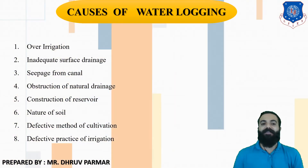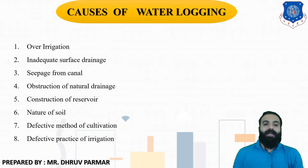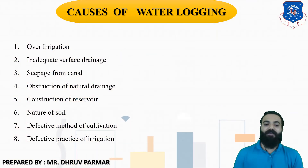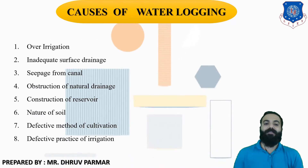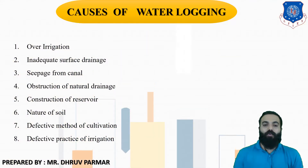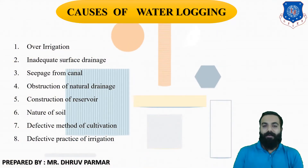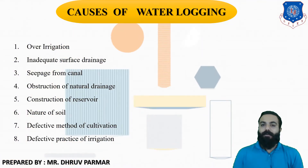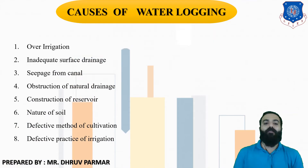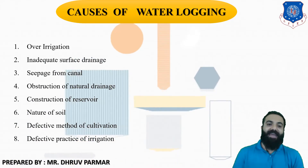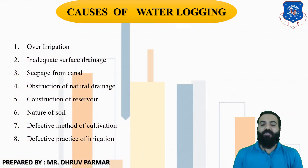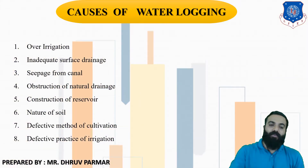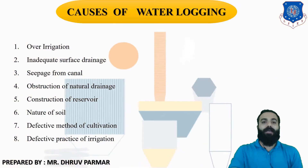The seventh cause is defective methods of cultivation, and the eighth is defective practice of irrigation. If these methods are improper, there are increased chances of waterlogging occurring. The methods and application of water should be done in a proper manner.